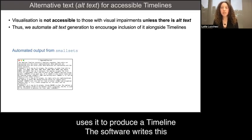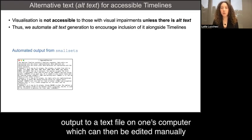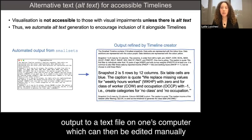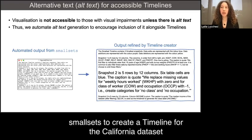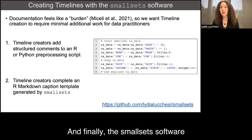The software writes this output to a text file on one's computer, which can then be edited manually by a timeline creator. This alt text was generated when we used small sets to create a timeline for the California dataset.